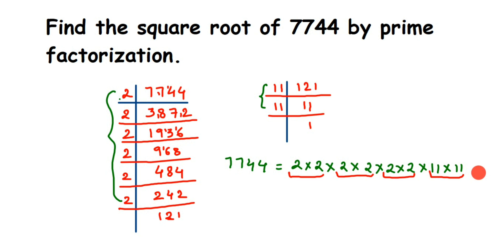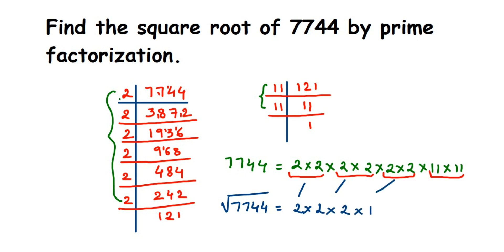Since it is a perfect square, we can find the square root. The square root of 7744 equals: from each pair, take one factor. From the first pair take one 2, from the second take one 2, from the third take one 2, and from the last pair take one 11. Multiply them: 2×2=4, 4×2=8, 8×11=88. So the square root of 7744 is 88. The same process works for any number — pair up the prime factors, take one from each pair, and multiply. I hope this is clear; if you have further questions, drop a comment. Thank you for watching!